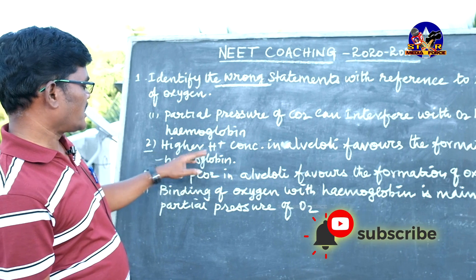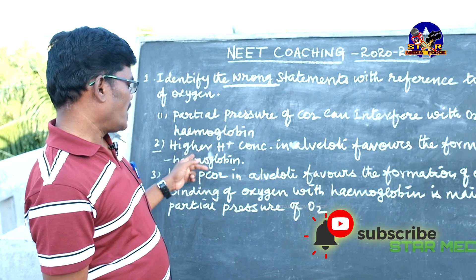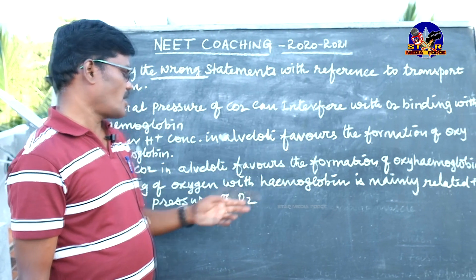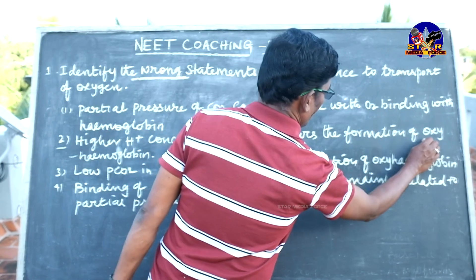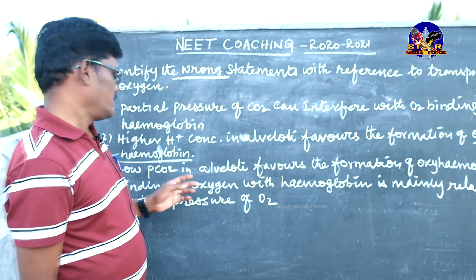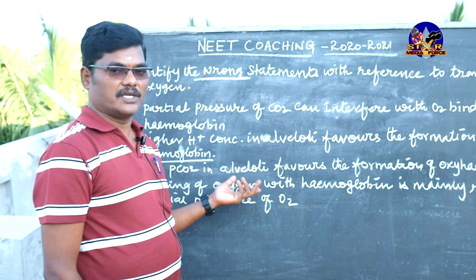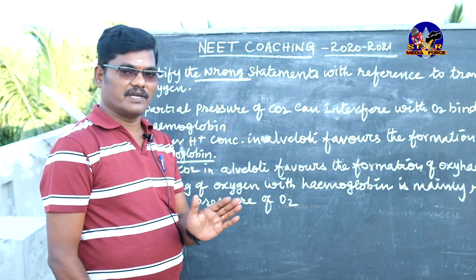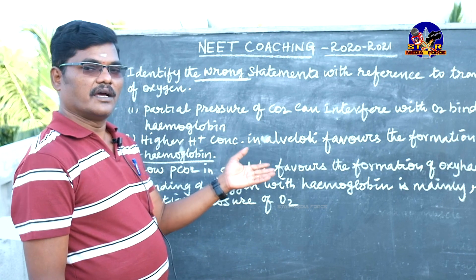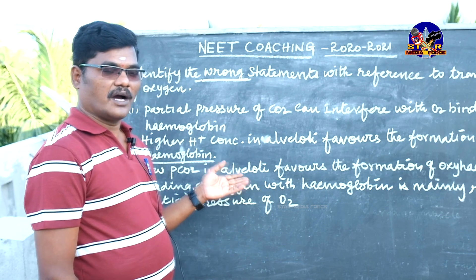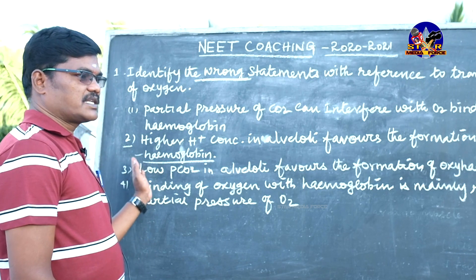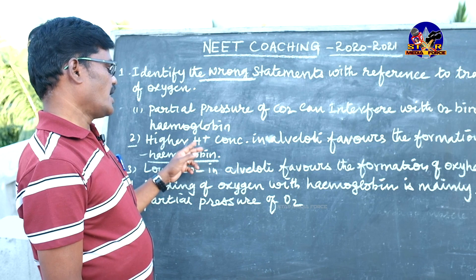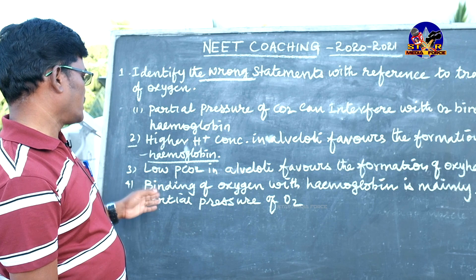Second option: higher hydrogen ion concentration in alveoli favors the formation of oxyhaemoglobin. Oxyhaemoglobin means hemoglobin, the respiratory pigment present in blood cells. If the alveoli contain lots of oxygen and blood vessels are waiting for oxygen, the concentration gradient between oxygen ions and RBCs is needed to form oxyhaemoglobin. But here they have given hydrogen ion instead of oxygen ion, so we will move to the next option.